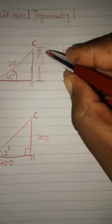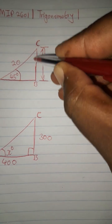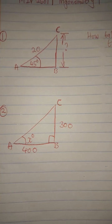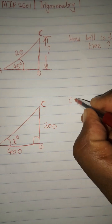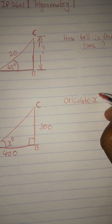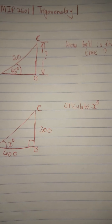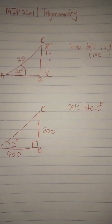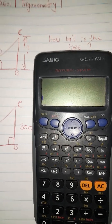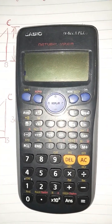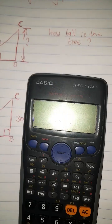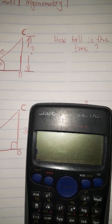We are calculating the side — specifically PC in this case. The second problem has a missing angle x, so we need to calculate x degrees. It is very important to have your calculator. Consider having a Casio fx-82ZA Plus — this calculator is best when working with these problems. I'll show you how to apply it.